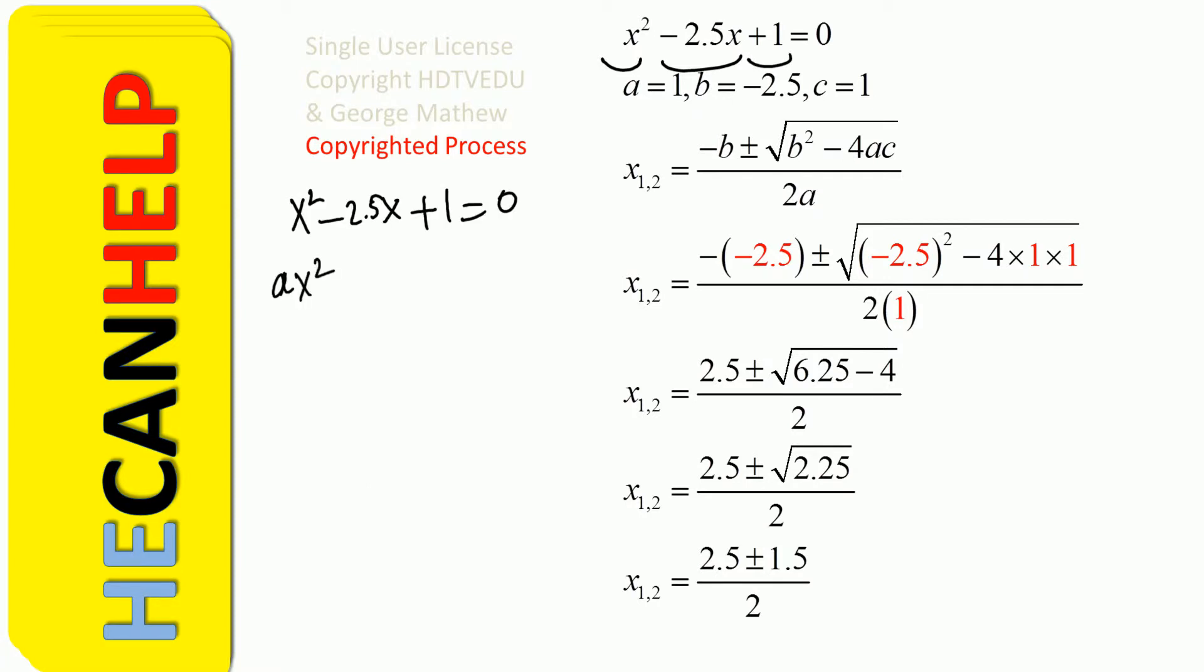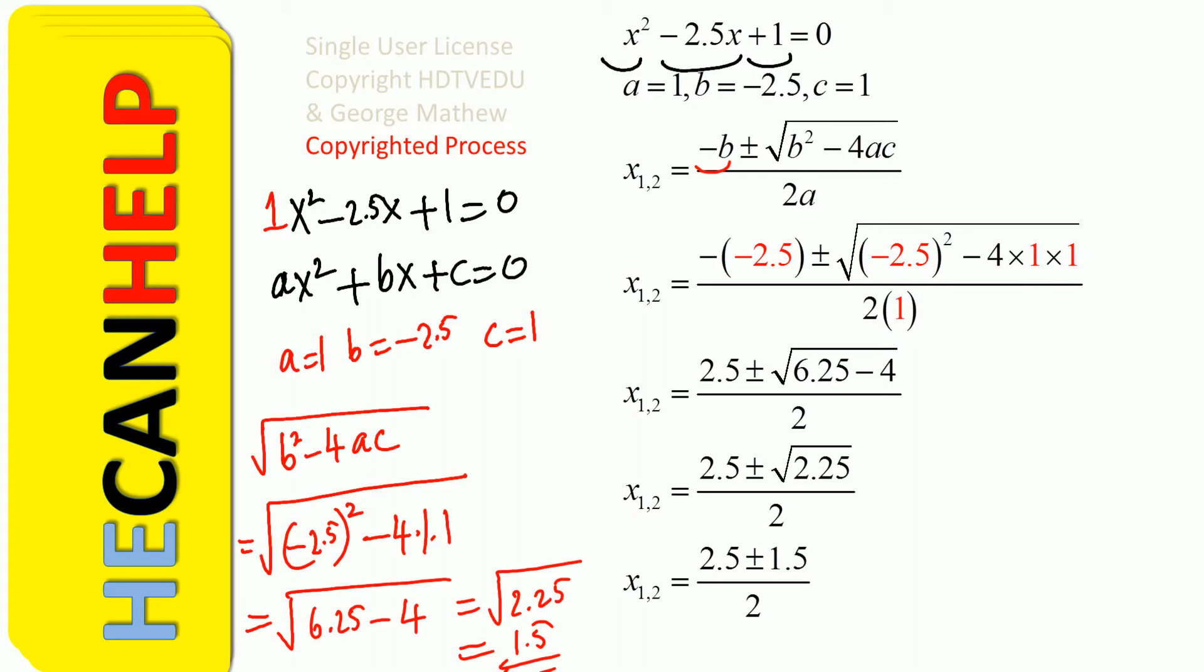Compare it with ax squared plus bx plus c is equal to 0. When nothing is written next to x squared, it is 1. So a equals 1, b equals negative 2.5, and c equals 1. Using negative b plus or minus square root of b squared minus 4ac divided by 2a, we get x equals 2.5 plus or minus 1.5 divided by 2.